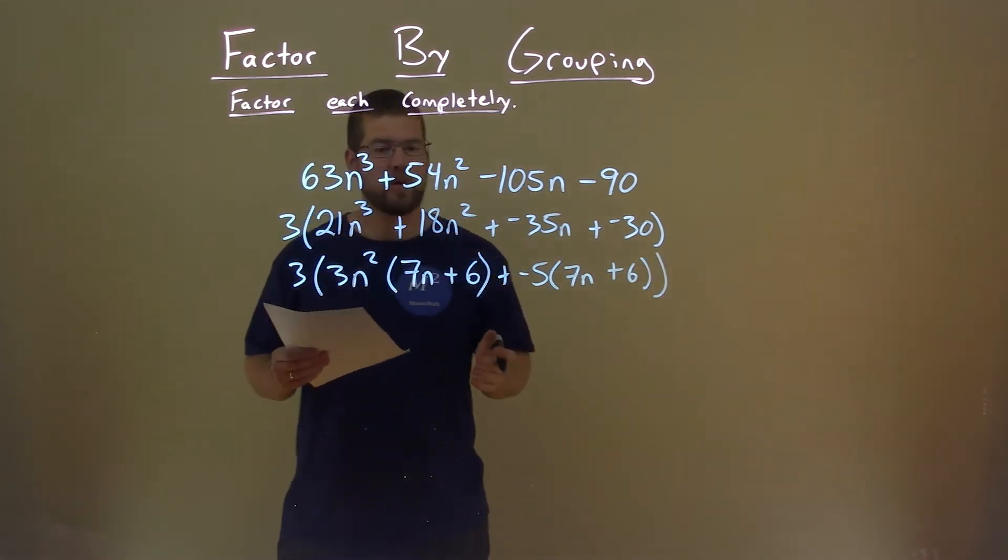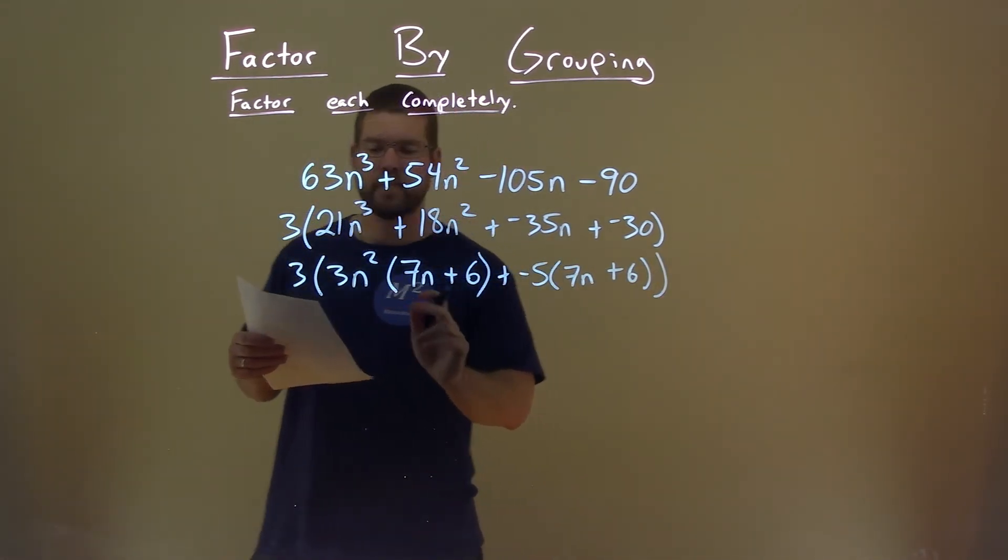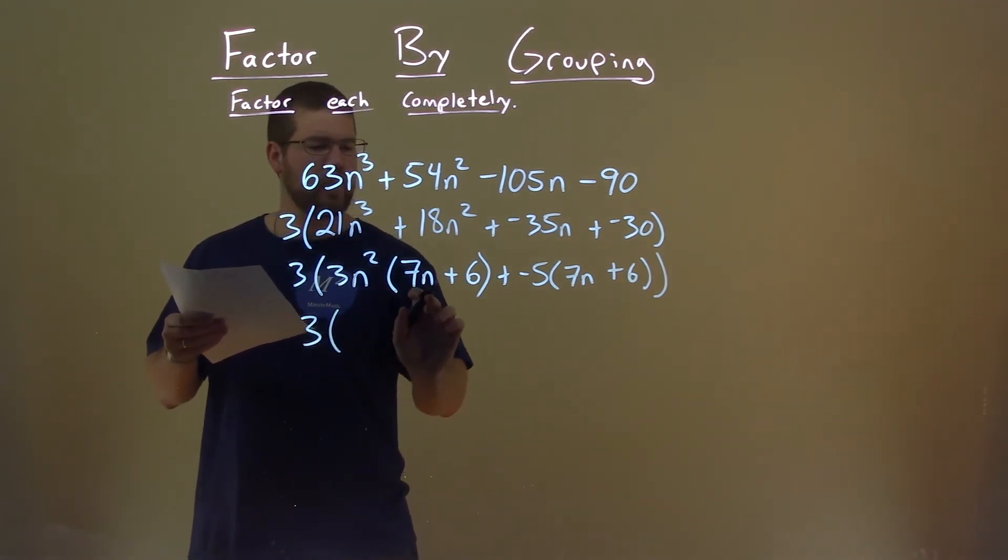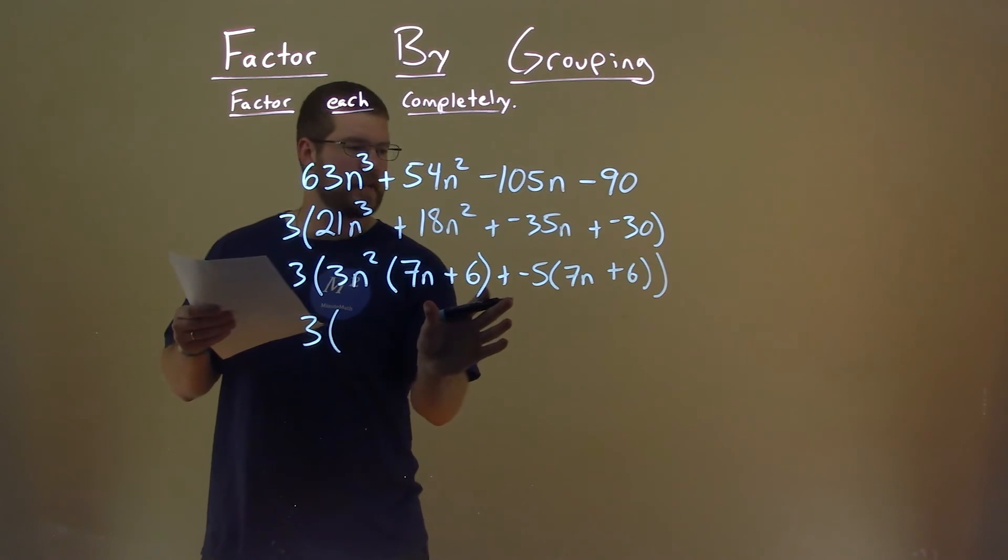And that's kind of our goal. Notice the 7n plus 6 written twice here. So, 3 is still on the outside, but if we pull out a 7n plus 6 on the inside parentheses,